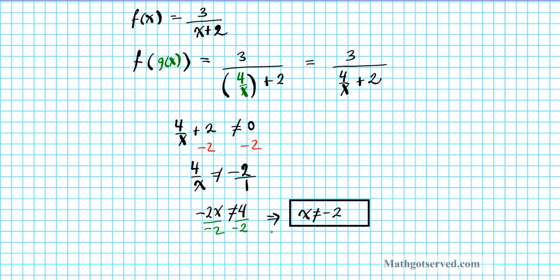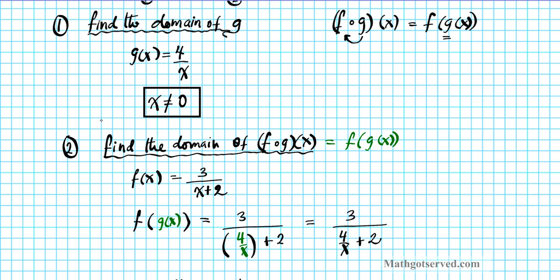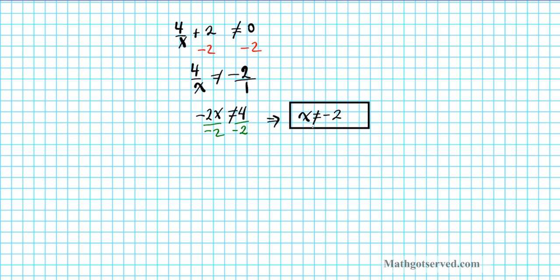So what is our final answer? Remember, we are to unite the domain of g and the domain of the composed function. So we have x cannot be zero and x cannot be negative 2. So our domain is the set x such that x cannot be negative 2, and we are finding the union here, so it's not 4, and x cannot be zero. So this is the domain of our composite function f of g of x.